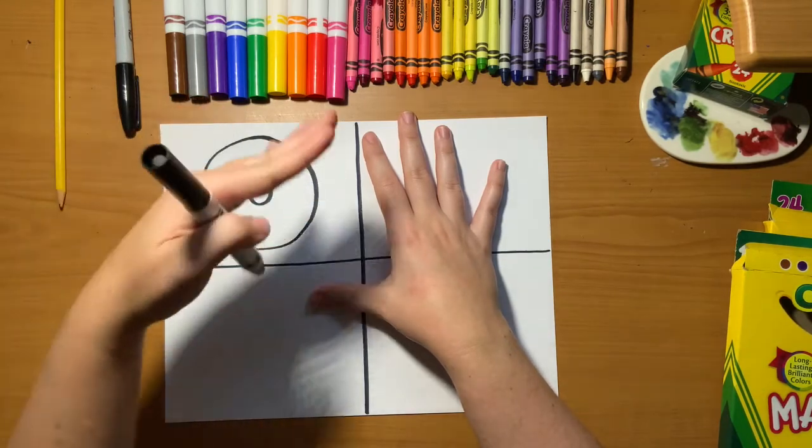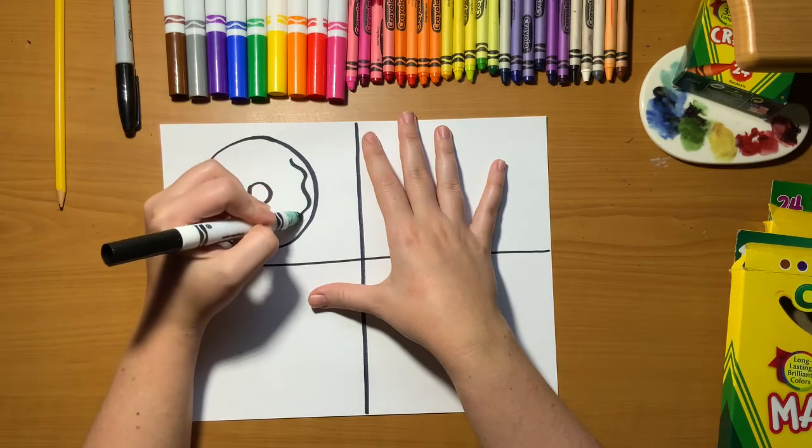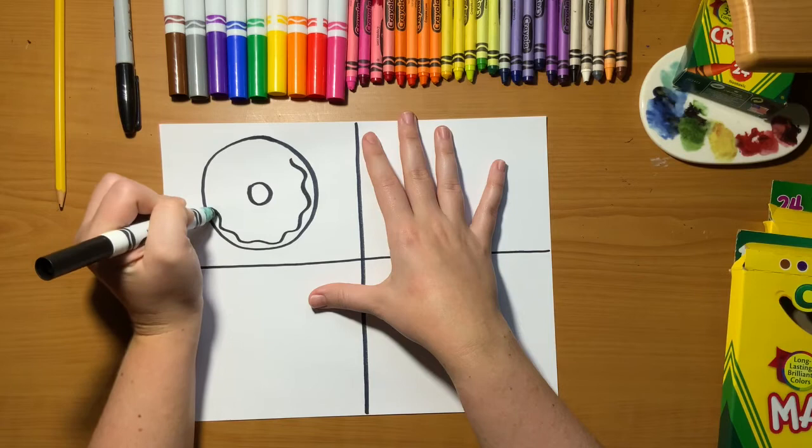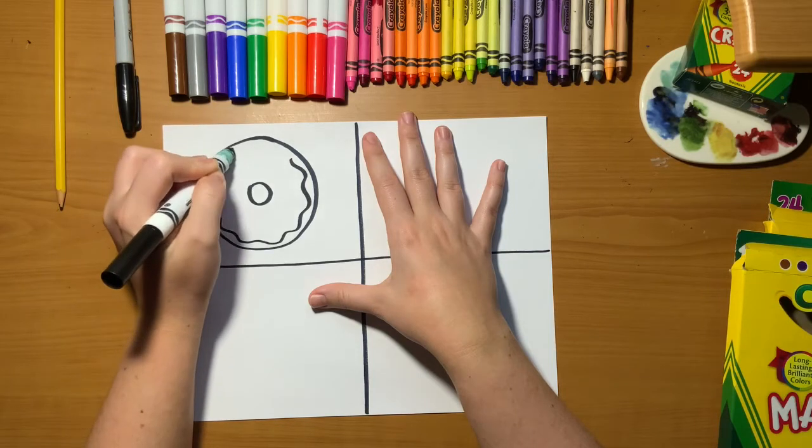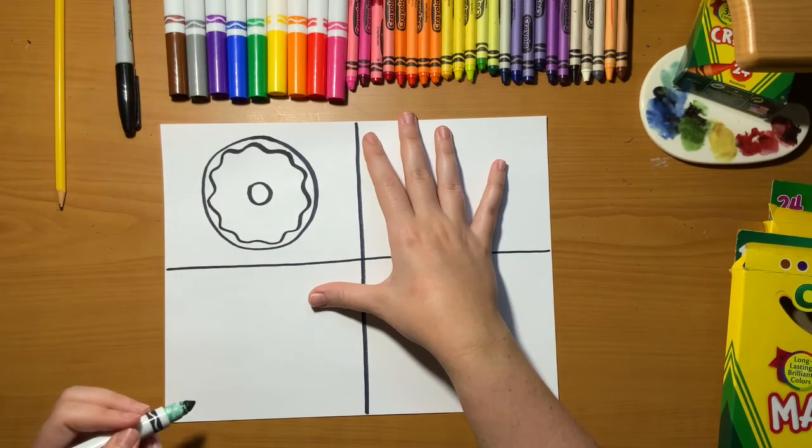Now to make the frosting, we're going to do a wavy line along the edge of our circle. See how I'm following the first circle that I drew with my wavy line? That makes our frosting.